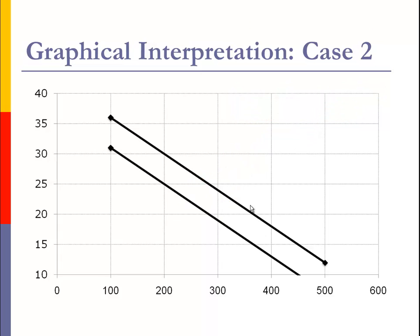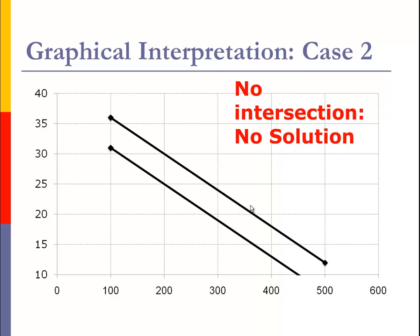Graphical interpretation number two, two parallel lines go in their separate ways, distinct ways. They never meet up. There's no intersection. There is no solution. I'm sorry. Our friends don't meet up. Our graphs don't cross. No solution.